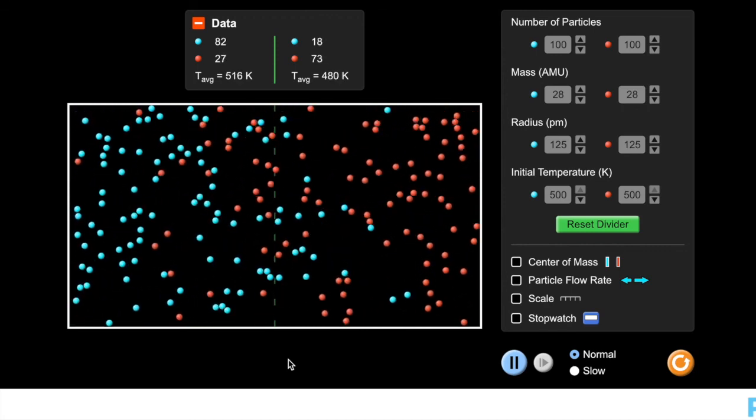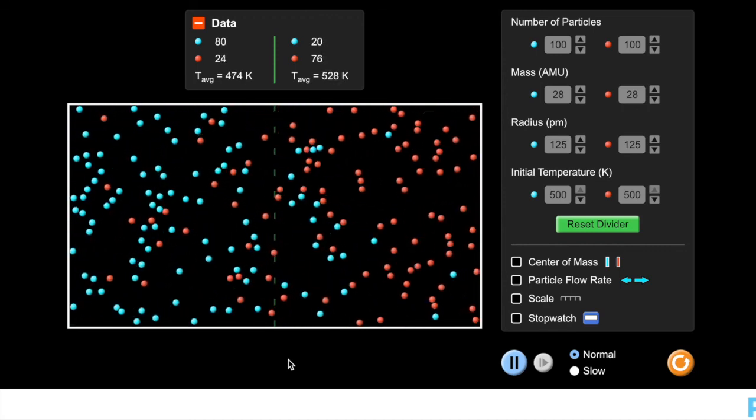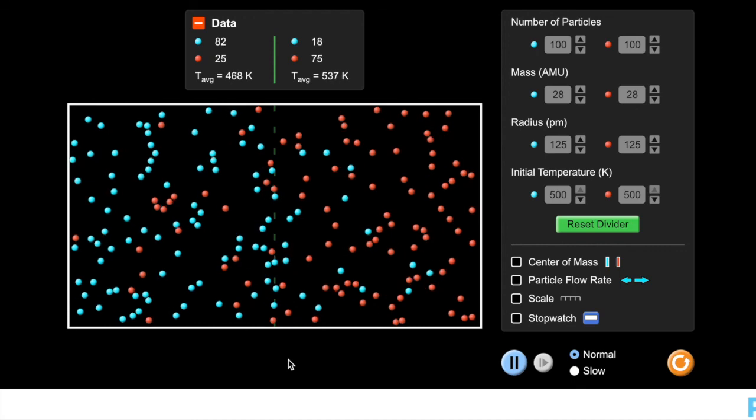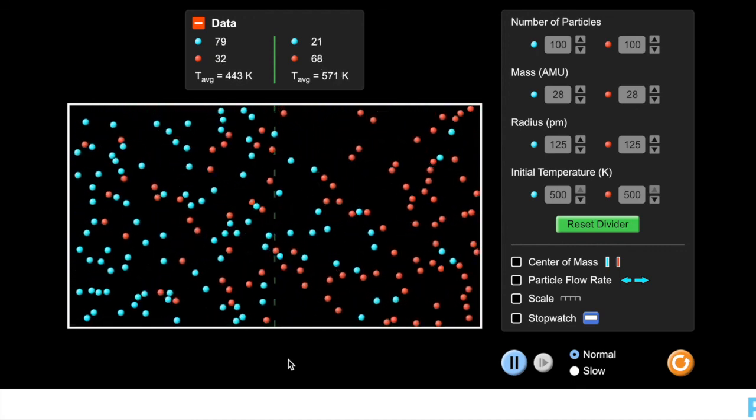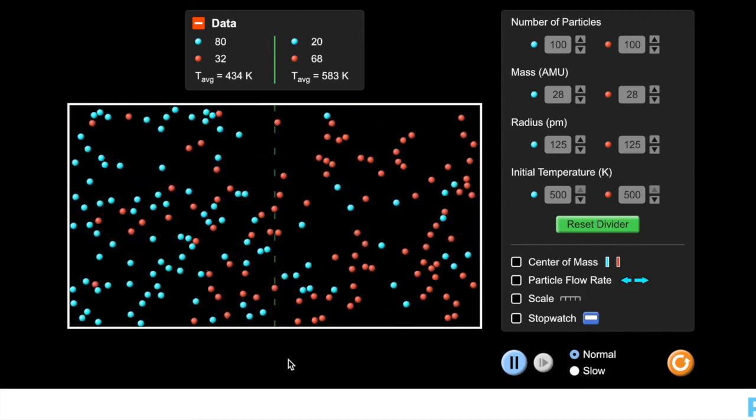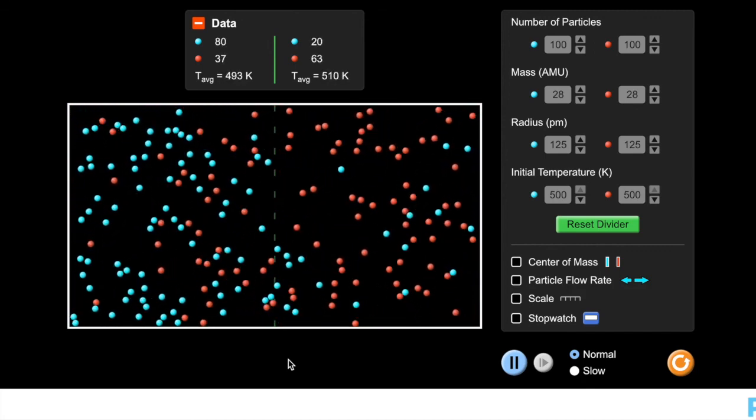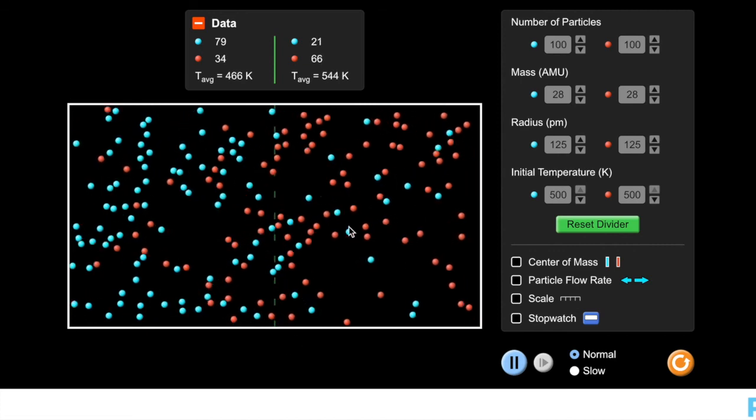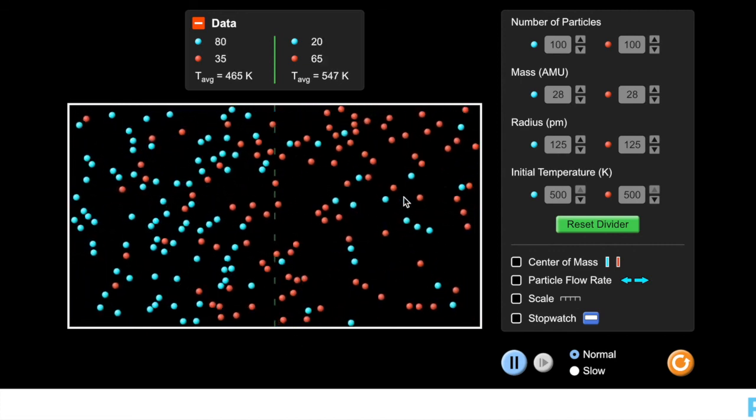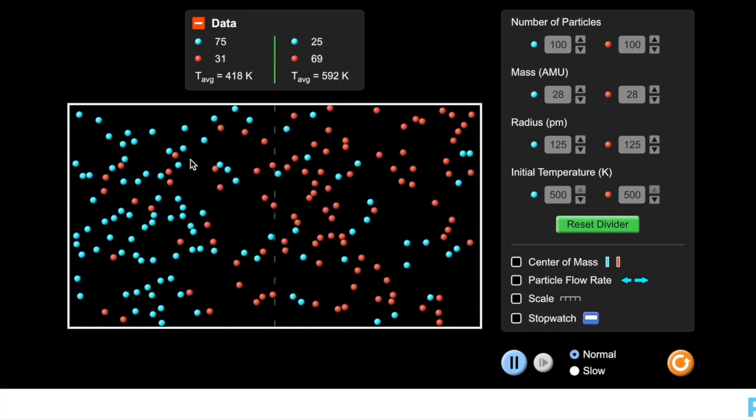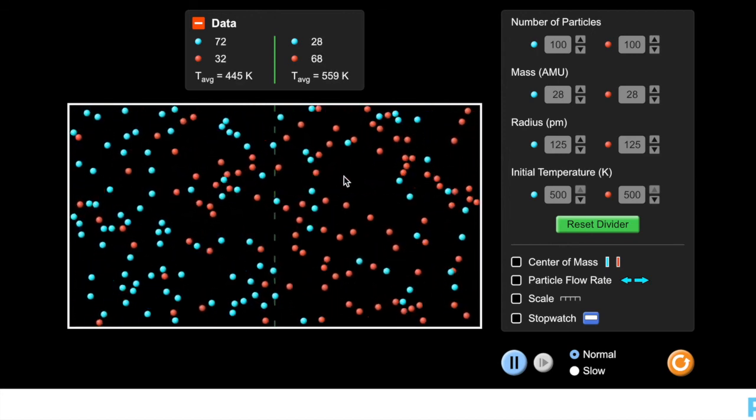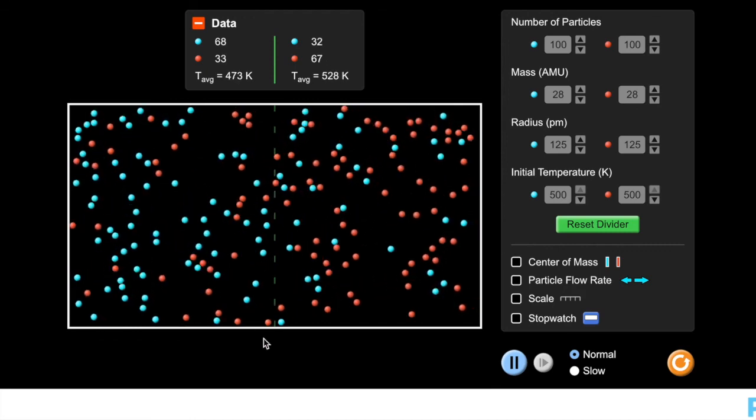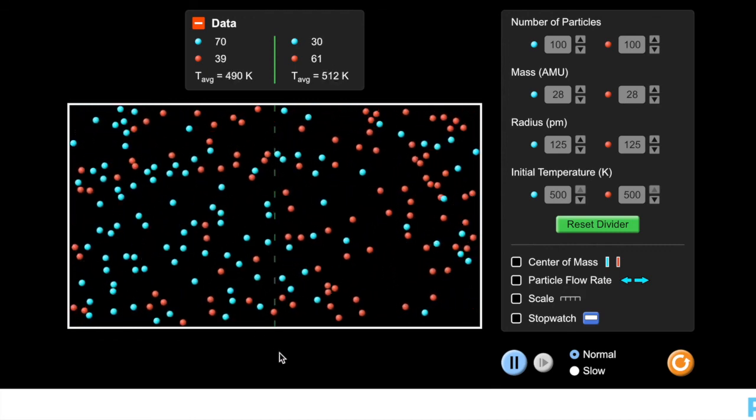It's a lot more chaotic. This is a lot less orderly. But it is more favorable. It's easier for the molecules to take on this configuration because of entropy. Because it's a lot easier for all these red molecules to move across all of this space, and the same with the blue, than it is for them to stay in this smaller confined space. So because it's easier for them to spread out, they will spread out.